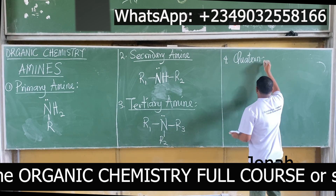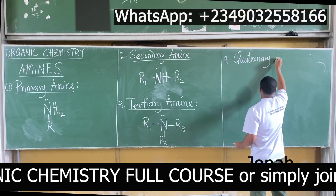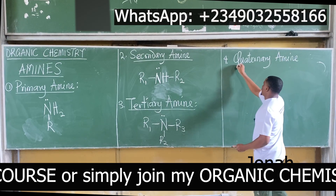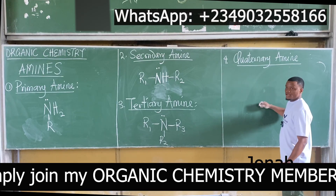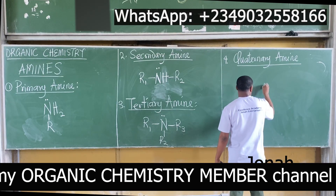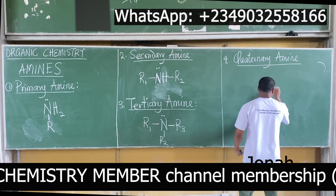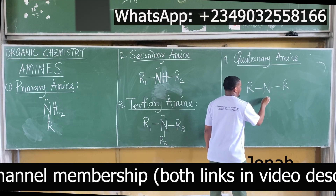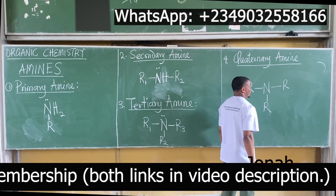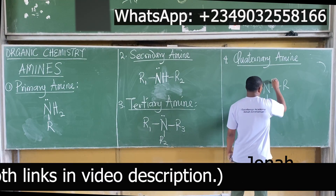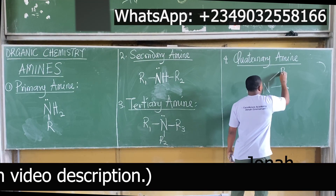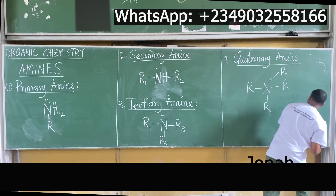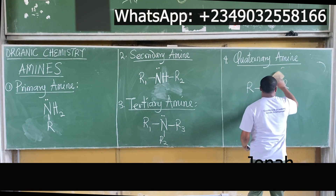Quaternary amine. For a quaternary amine, what you now have is nitrogen attached to four different organic substituents — four alkyl groups, organic substituents. This is R1 and the others positioned around it.